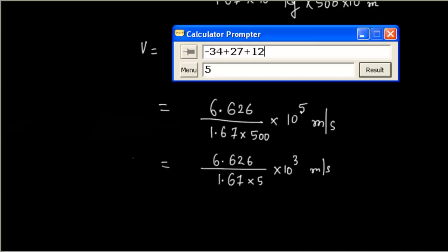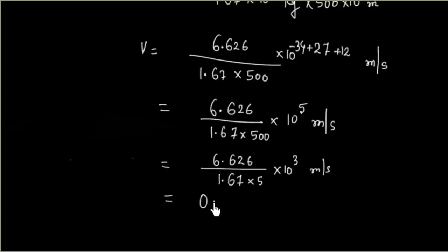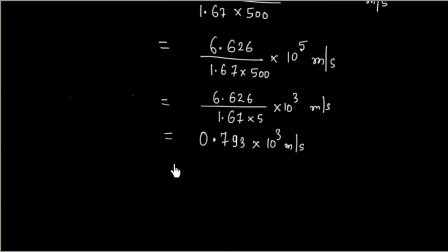Let us simplify: 6.626 divided by (1.67 × 5) = 0.793. So v = 0.793 × 10³ meter per second, which is 7.93 × 10² meter per second.